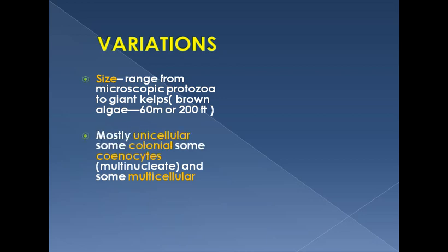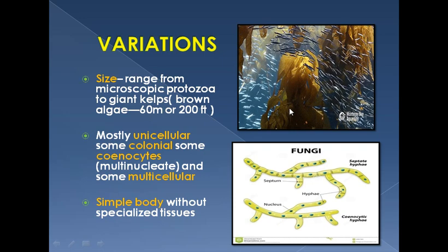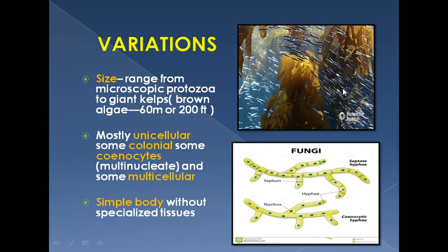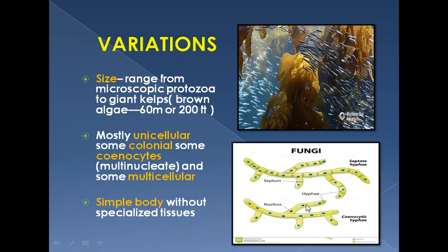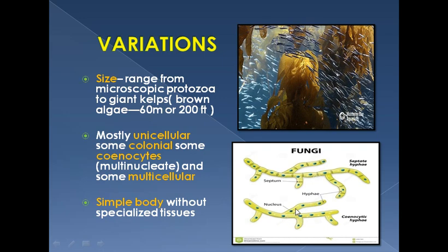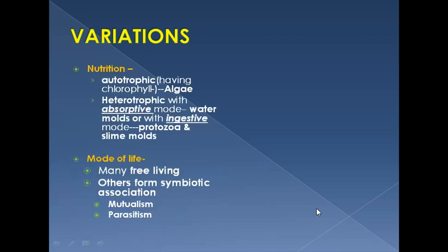Mostly unicellular protists are found; some are colonial, meaning the members live in the form of a colony. Some protists are coenocytic, meaning they are multi-nucleated and not divided into proper cells. Some are properly multicellular with a simple body without specialized tissue, sometimes called a thallus. You can see in this picture these are the kelps — giant brown algae — and these are coenocytic organisms with multi-nucleated hyphae, thread-like structures found in fungi-like protists.